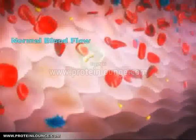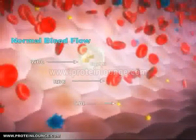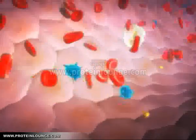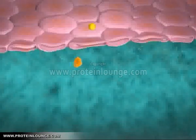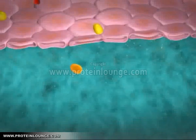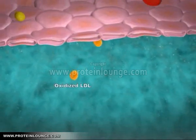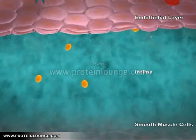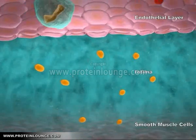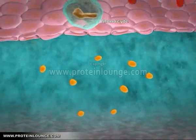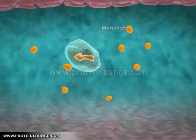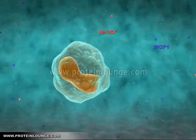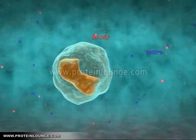Plaque formation starts with the deposition of LDL in a normal blood vessel. LDL penetrates through the endothelial layer and gets converted to its oxidized form. Meanwhile, a monocyte enters the intima through the endothelial layer, then proteins like MCP1 and MCSF cause